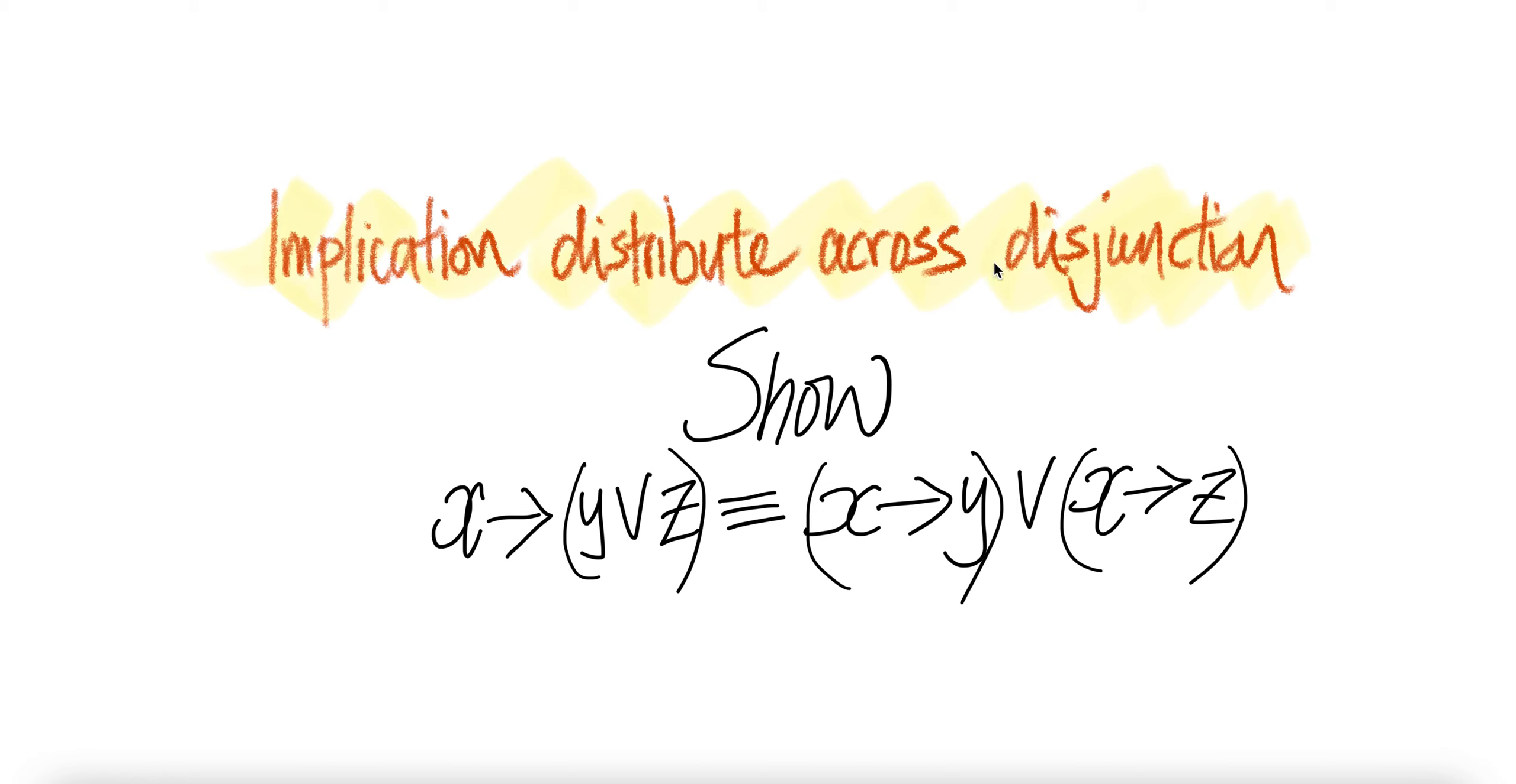Implication distributes across disjunction. Show x imply y or z is equivalent to x imply y or x imply z.